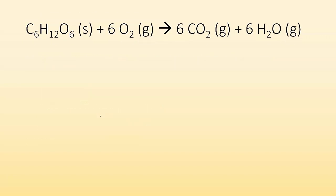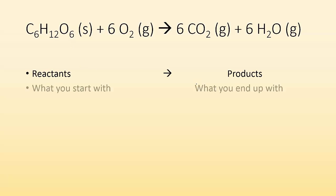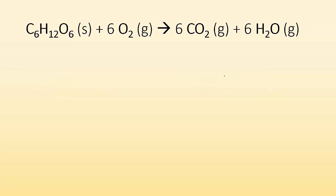Here's cellular respiration — basically the combustion of sugar. The reactants are on the left side and the products are on the right side. The reactants are what you start with and the products are what you end up with. So the left side of the arrow are the reactants, the right side of the arrow are the products.